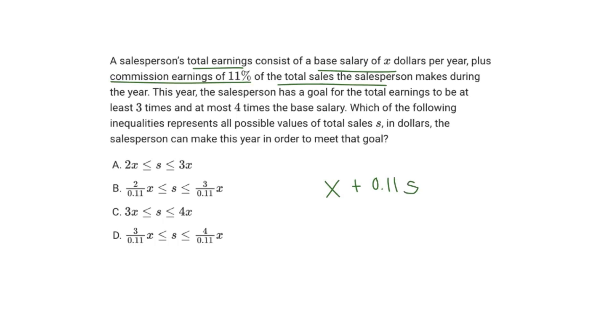It says this year the salesperson has a goal for the total earnings, so this value right here, the total earnings to be at least three times and at most four times the base salary. The base salary, remember, is the value X.